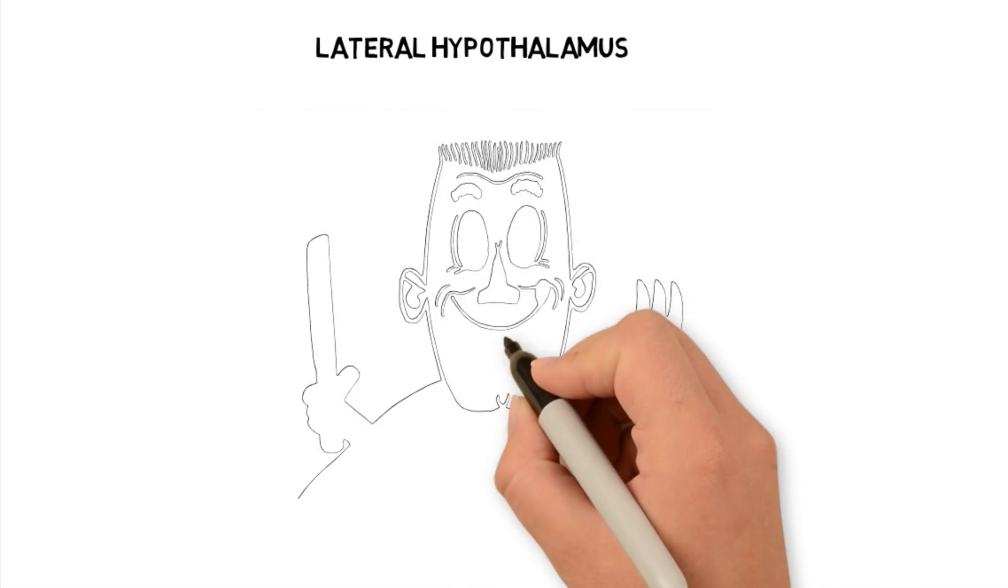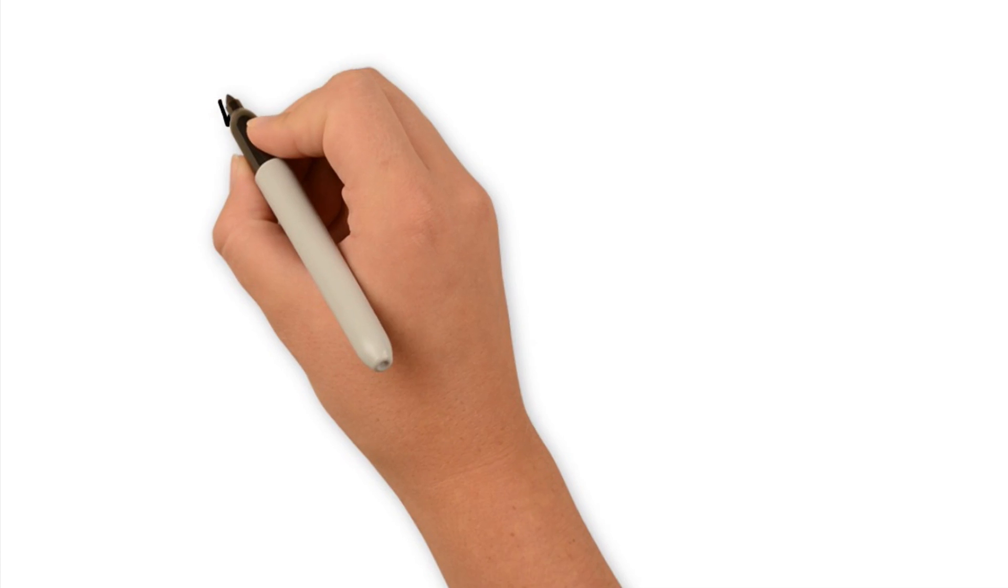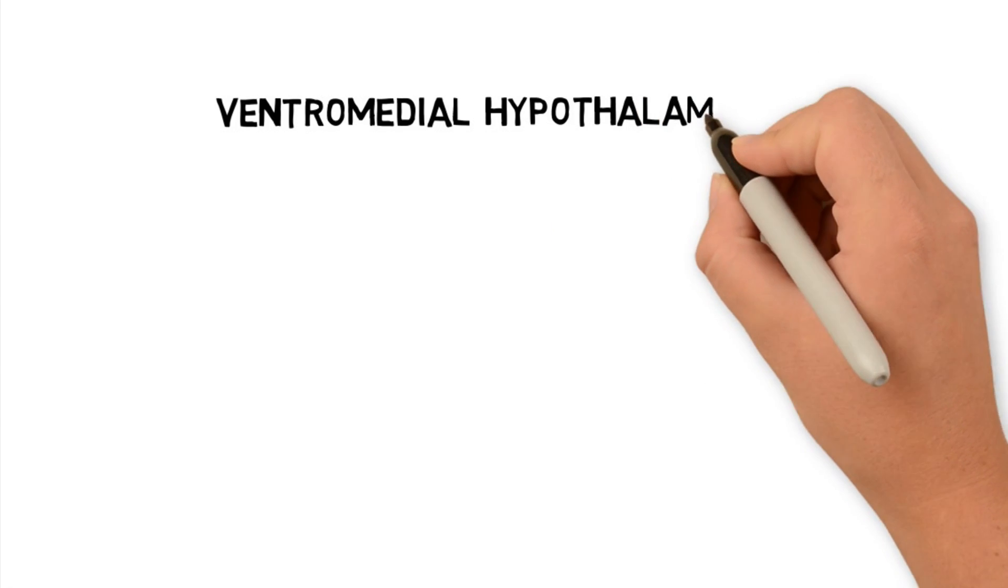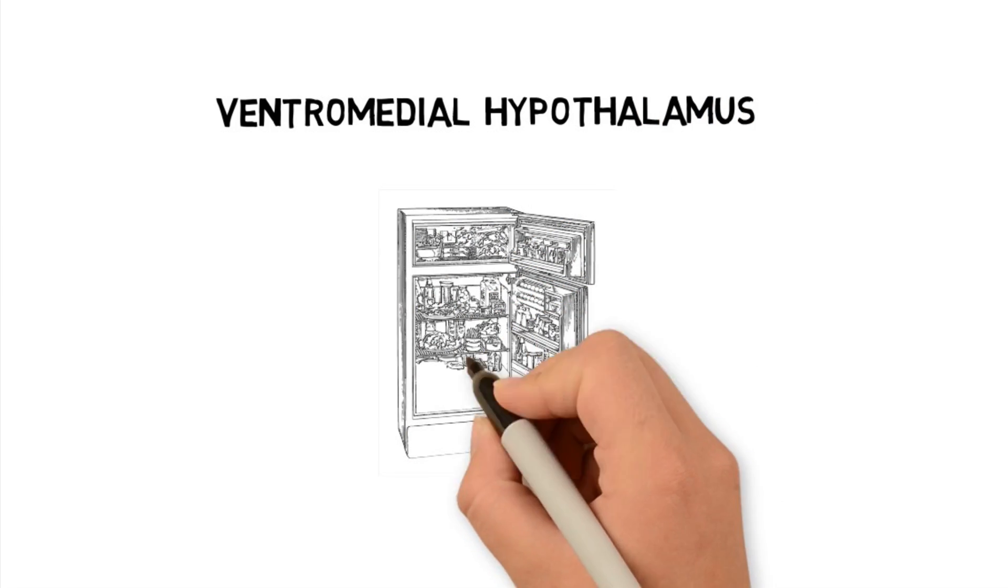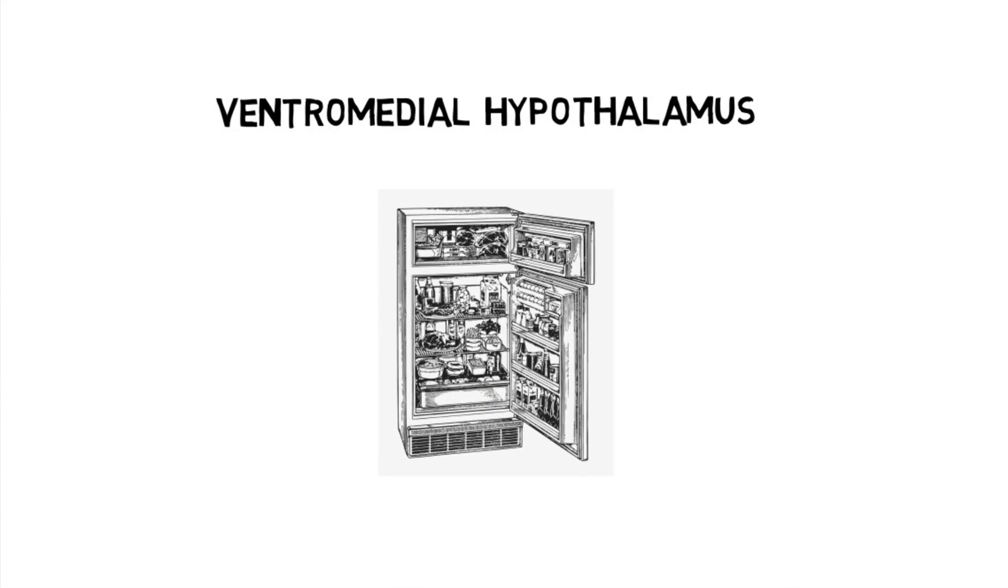There is the lateral hypothalamus that makes us feel hungry. If you remove it, you'll never ever be hungry again. And there's the ventromedial hypothalamus that makes you feel full. If it's removed or destroyed, you'll never be able to feel full again. These two sections work together like a seesaw controlling our eating patterns.